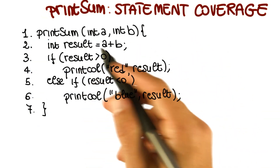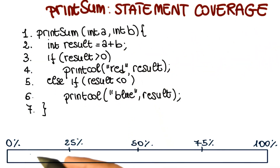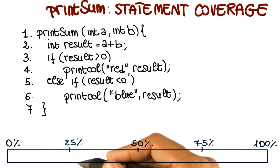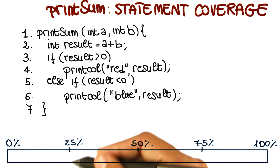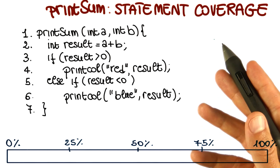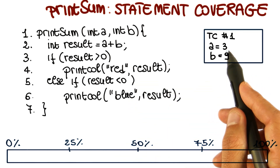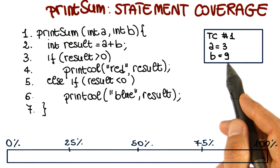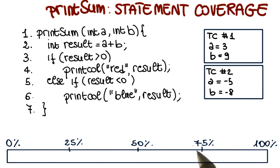Now let's go ahead and measure statement coverage on our print sum example. There is a progress bar showing the percentage of coverage achieved — reaching 25% means covering a quarter of statements, and the goal is to reach 100%. We have two test cases: the first has inputs A equal to 3 and B equal to 9, and the second has inputs A equal to minus 5 and B equal to minus 8.